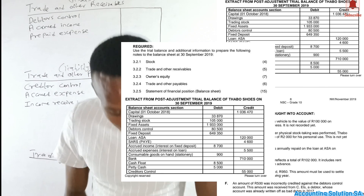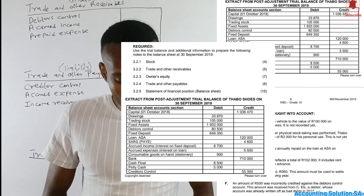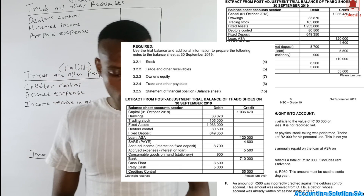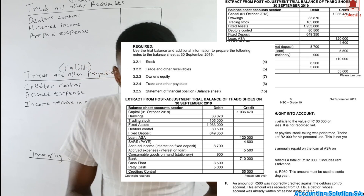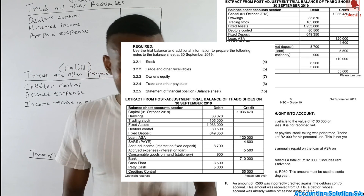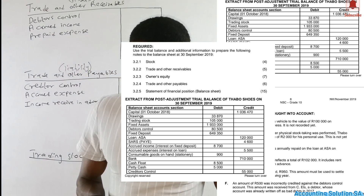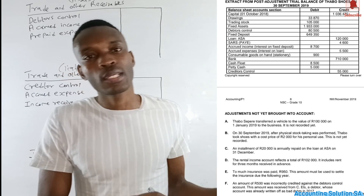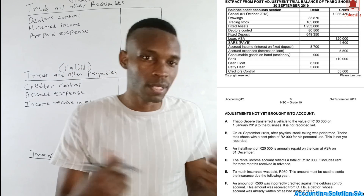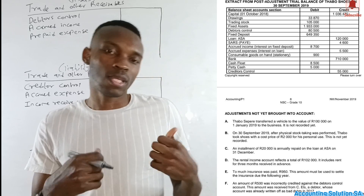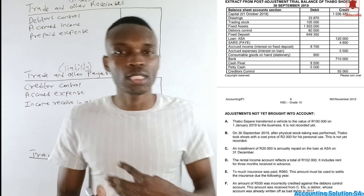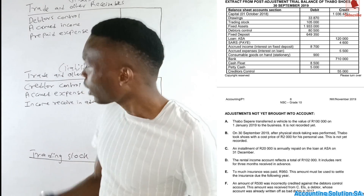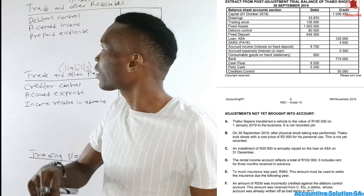Now let's go to the question paper. We are asked to use the trial balance and additional information to prepare notes to the balance sheet as at 30 September 2019. We will start with trading other receivables, then trading other payables, and lastly trading stock. The balance sheet and equity notes will be covered in separate videos.